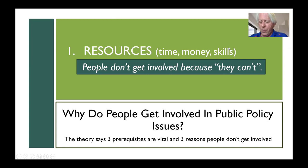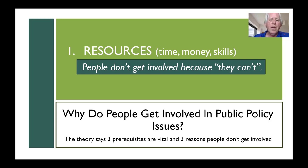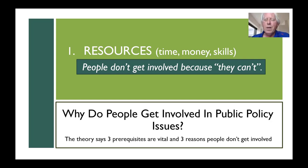The theory of the civic engagement model says that there are three key elements — three prerequisites that are vital to getting people to participate — and there are three reasons why people don't. The first is people don't get involved because they can't, and this is related to their level of resources: time, money, and skills — all resources that you bring to the table when you get involved in civic engagement.